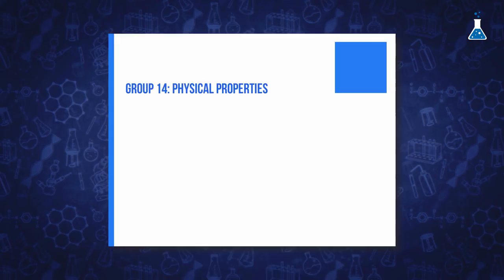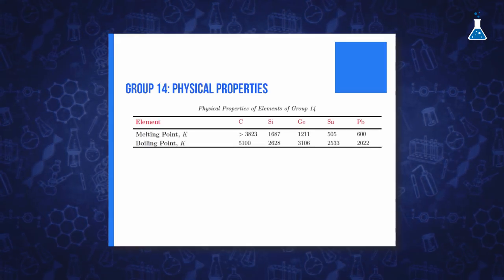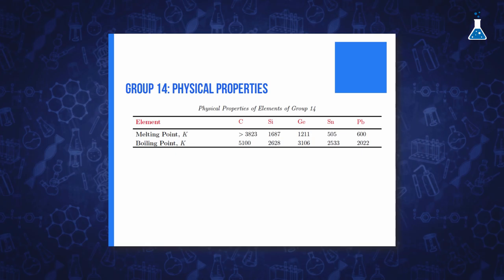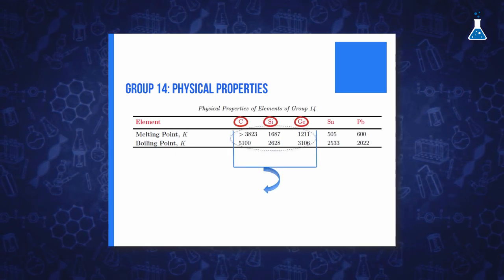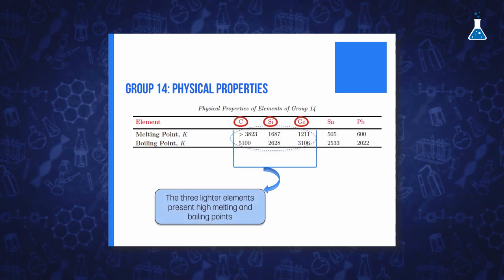This difference in the metallic behavior of the elements also has important consequences in their chemical and physical properties. Related with the physical properties, whereas the three lighter elements, the non-metal carbon and the two semi-metals silicon and germanium, present high melting and boiling points, showing network covalent bonding.